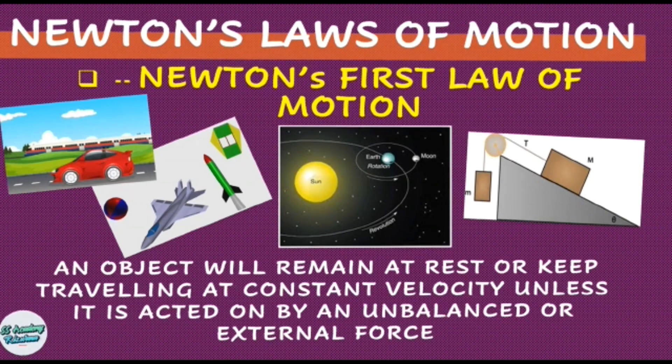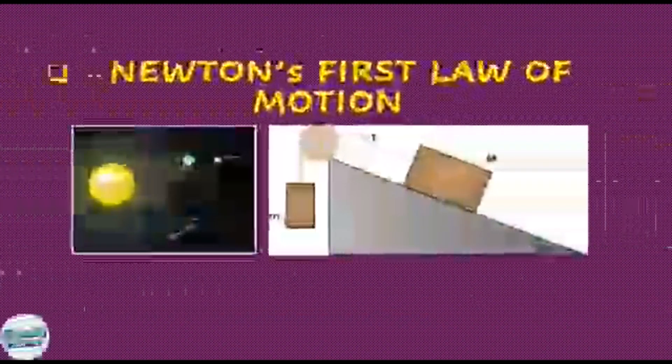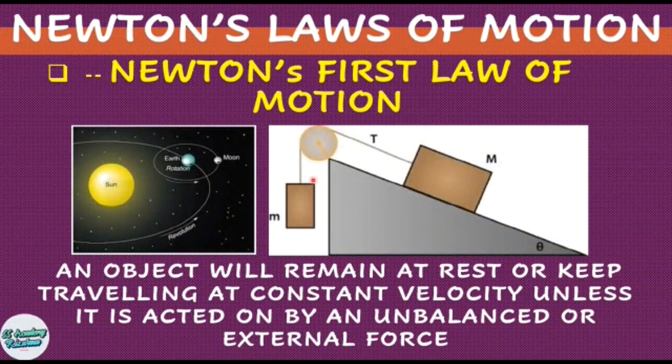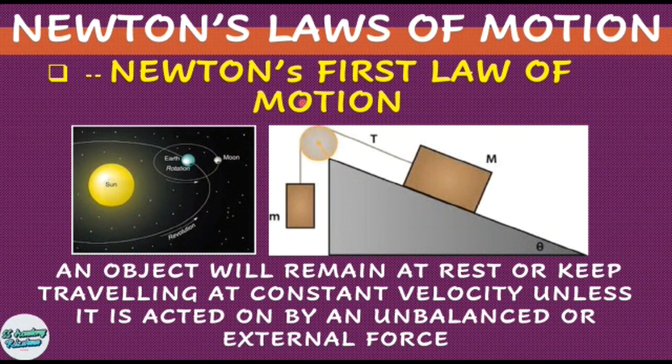The law of inertia first formulated by Galileo and later generalized by Descartes is the starting point and the fundamental assumption of classical or Newtonian mechanics. Galileo deduced the law of inertia from his experiments with balls rolling down inclined planes.